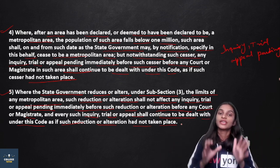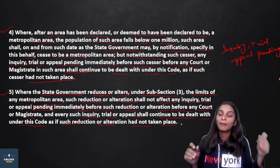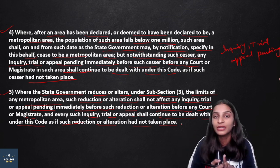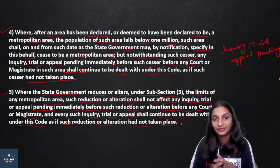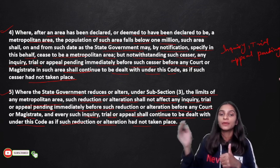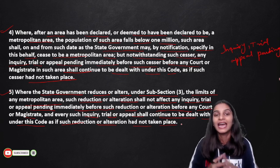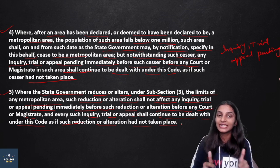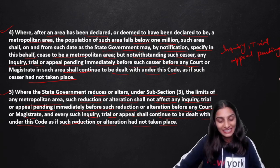So that covers Section 6, Section 7, and Section 8 — the Constitution of Criminal Courts in our code. Section 6 deals with classifications, which we have studied in detail. I hope you liked this video. If you did, please like it and share it with your friends. We'll see you in the next video. Until then, bye-bye. Take care.